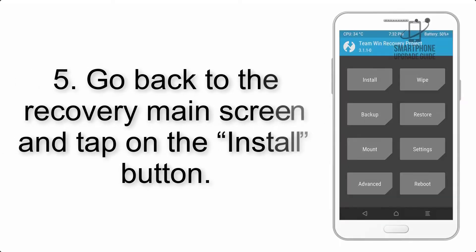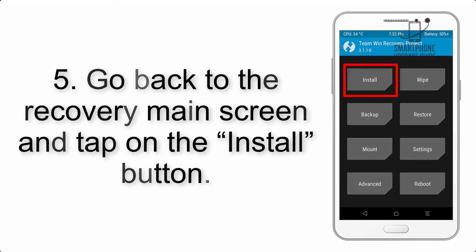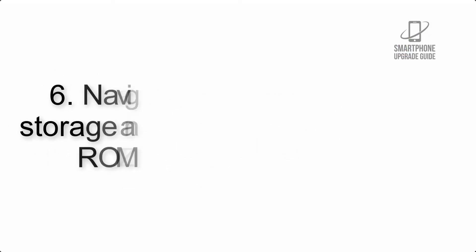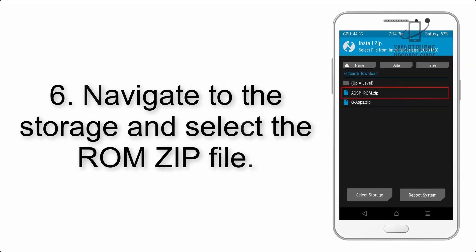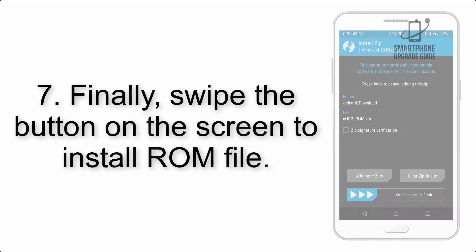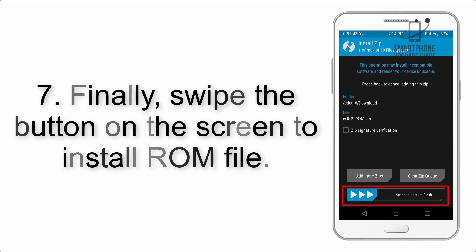Step 5: Go back to the recovery main screen and tap on the Install button. Step 6: Navigate to the storage and select the ROM zip file. Step 7: Finally, swipe the button on the screen to install the ROM file.